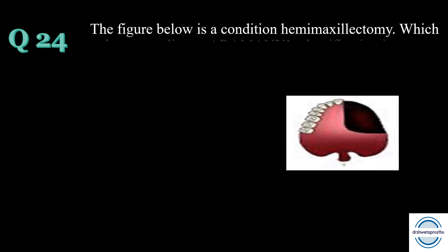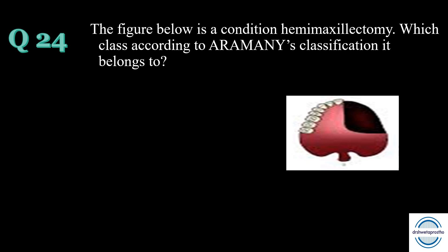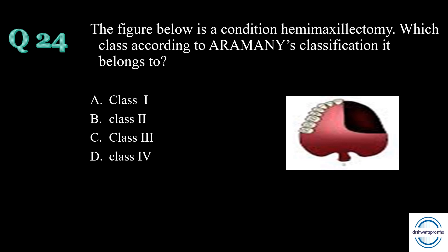Question number twenty-four: the figure shows a condition of hemimaxillectomy. Which class, according to Aramany's classification, does it belong to? A. Class 1, B. Class 2, C. Class 3, D. Class 4. The answer is A, Class 1. In this type, resection is performed along the midline of the maxilla and the teeth are maintained on one side of the arch. If you don't remember Aramany's classification, please revise it from the given link as it is very important for MCQs.